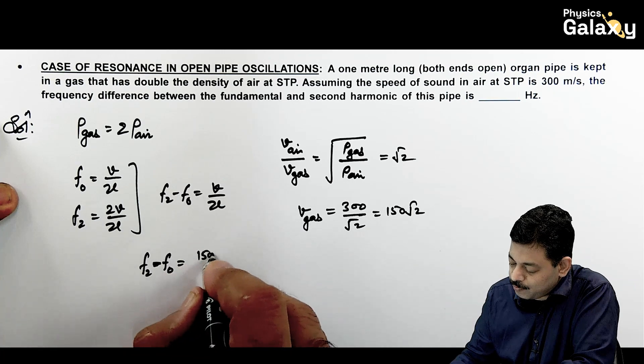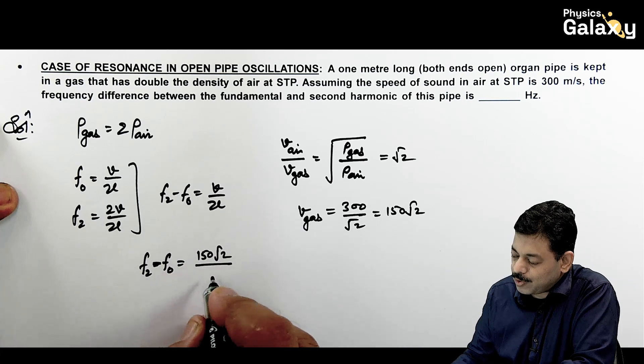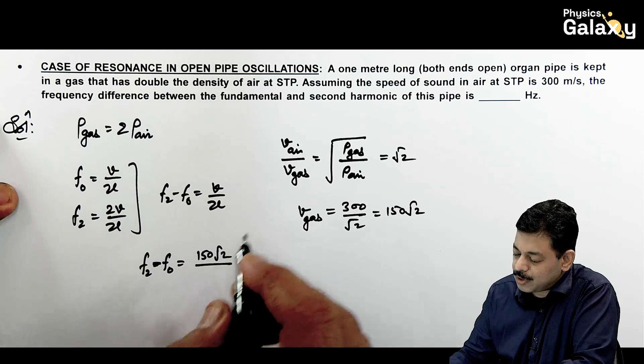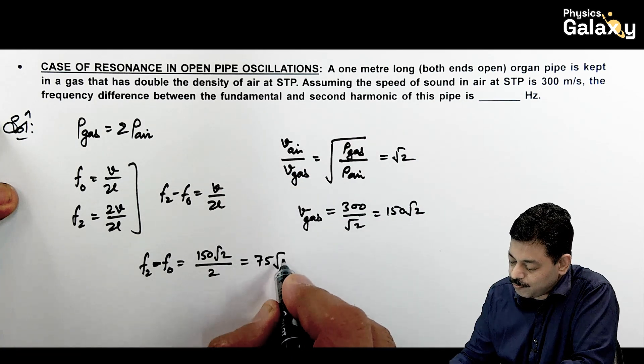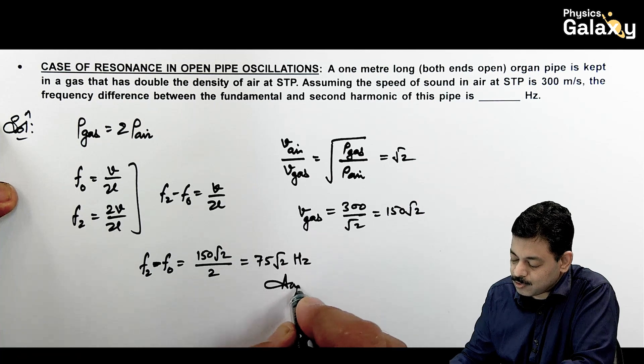So when we substitute for the difference calculation f2 minus f0. This is V by 2L. This is 150 root 2 divided by twice the length. Aur agar humari yahan pe length dekhen it is given to us as 1 meter. This is 2 that comes out to be 75 root 2 hertz. That is the answer to this question.